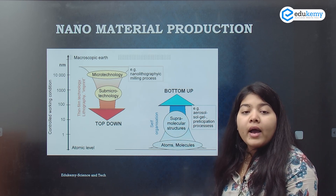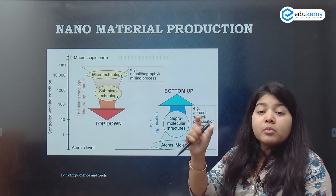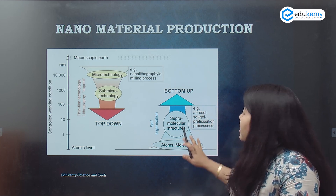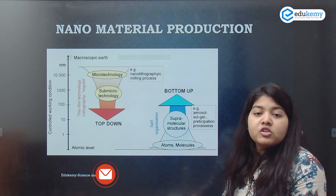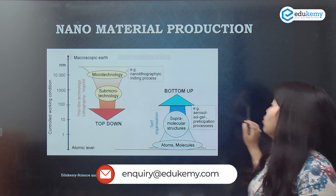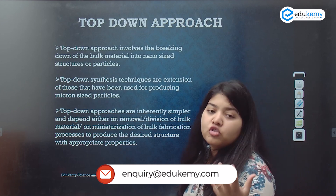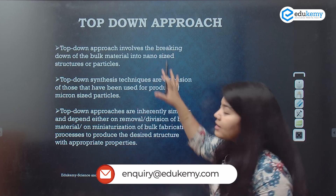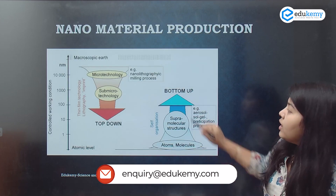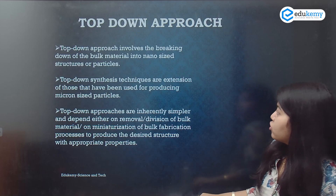The top-down approach is easier because you already have materials with known properties. In the bottom-up approach, you can at most make aerosols, sol gels, precipitation processes, etc. The top-down approach is mostly used, whereas the bottom-up approach is not much used. For your exam, you simply need to know there are two approaches: top-down and bottom-up.